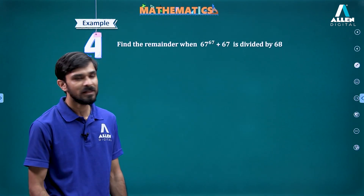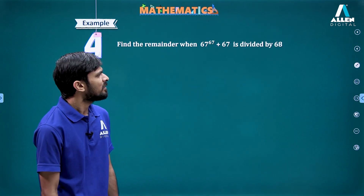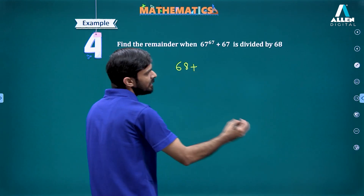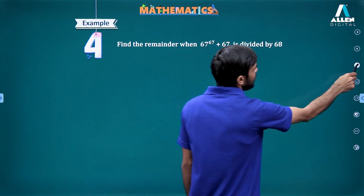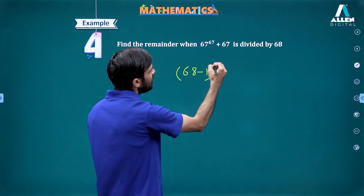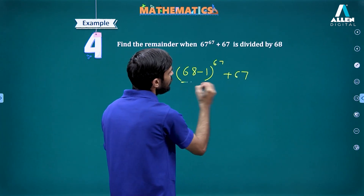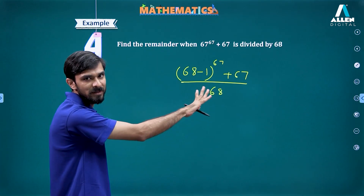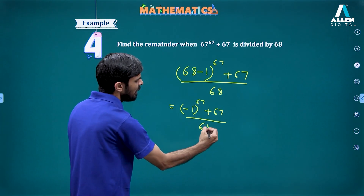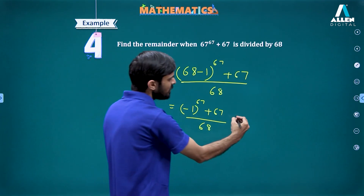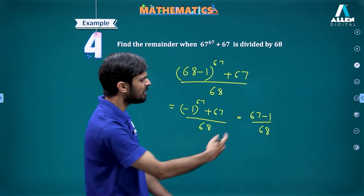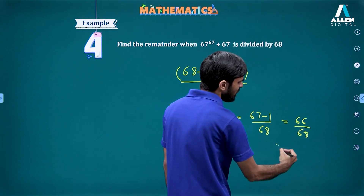Next problem: 67^67 plus 67 is divided by 68. We can write 67 as 68 minus 1, so 67^67 divided by 68 gives remainder (minus 1)^67, which is minus 1. Adding the 67, we get minus 1 plus 67 divided by 68, which is 66 divided by 68. Since 66 is less than 68, the remainder is 66.